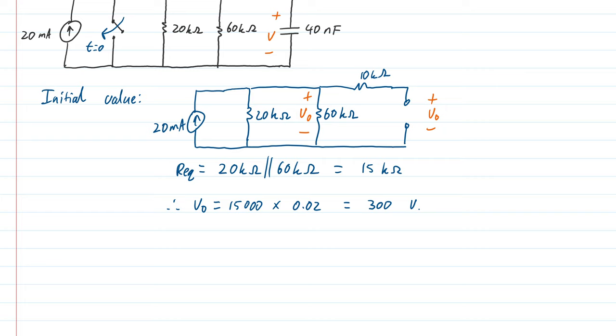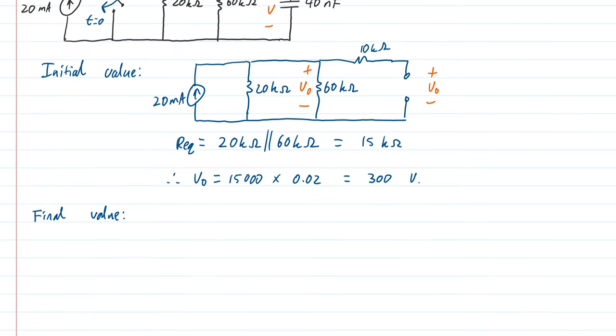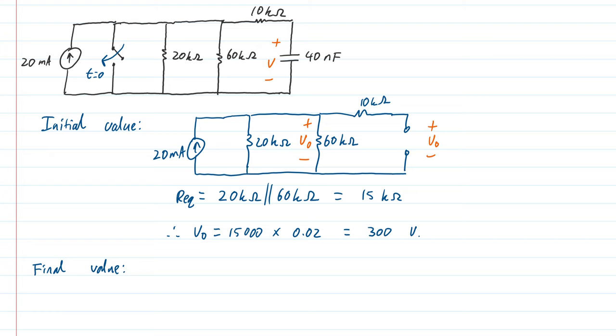We also need to know the final value. So again, we analyze the circuit in the final configuration. Looking at the circuit diagram, we will have the 20 milliamp current source that will be now totally shorted through the switch.